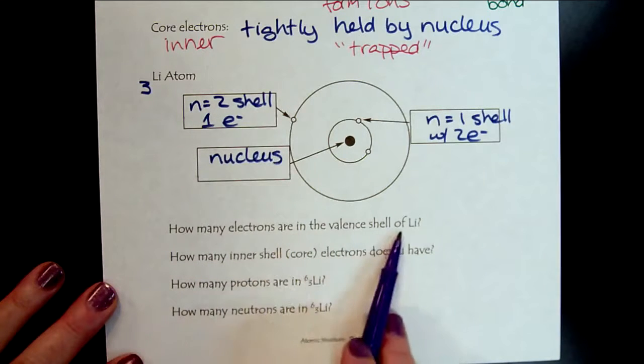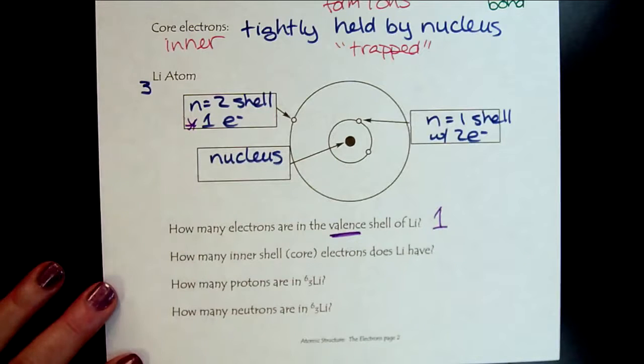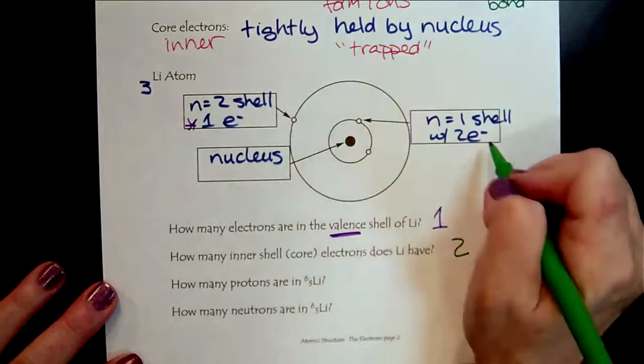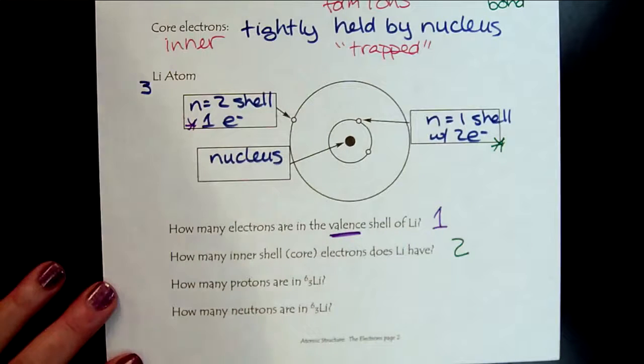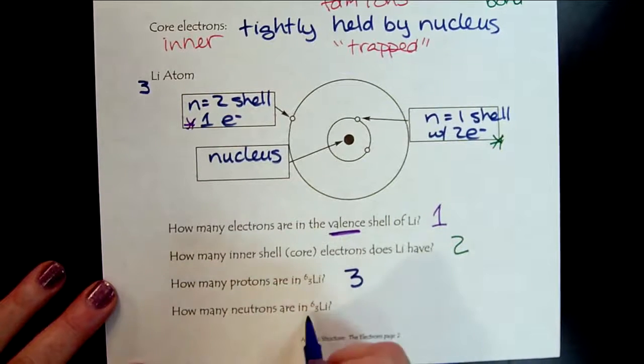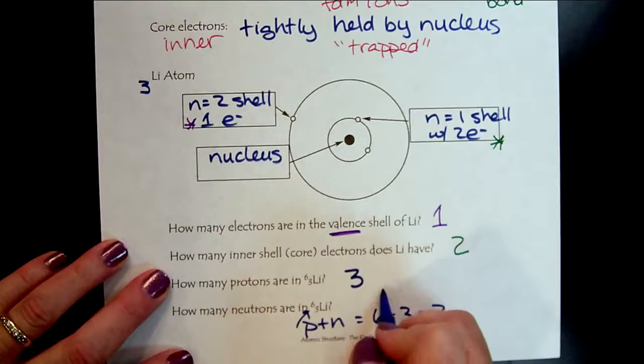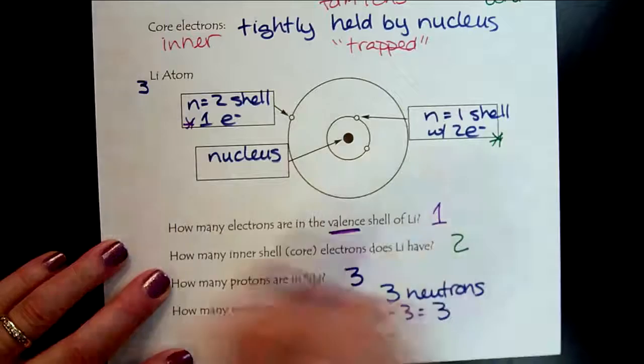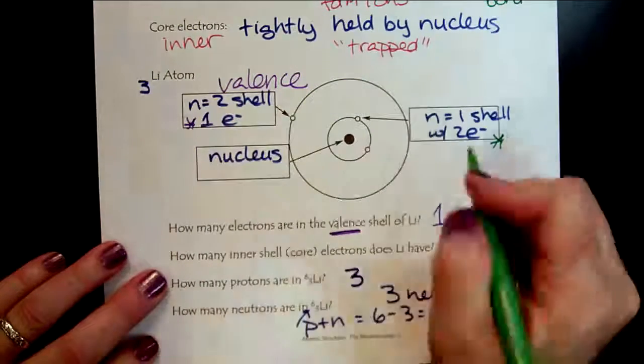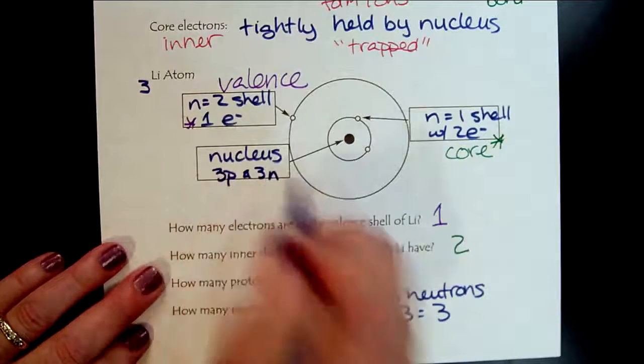So to make sure that we understand the vocabulary, so how many electrons are in the valence shell? So valence is outermost. So there's only one electron in the valence shell. How many inner shell or core electrons do we have? There's our two right there. And then just to kind of loop back through some of our atomic structure, protons, three neutrons. There's our mass number. That six is the protons plus the neutrons. So six minus three tells us that we would have three neutrons. So making sure that we're clear here. So here's our valence. And here's our core. And then there's our nucleus with three protons and three neutrons.